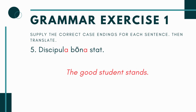Number 5: 'discipula___ bona___ stat.' We have a noun and adjective both missing endings. Look at your verb: stat ends in -t, so it's singular, which means the subject is discipula. Since discipula ends in -a, bona will also end in -a and be singular. So you're saying: discipula bona stat — the good student stands, or is standing.